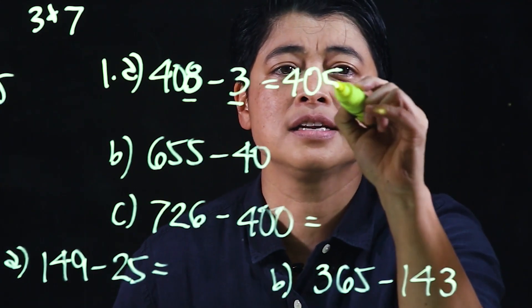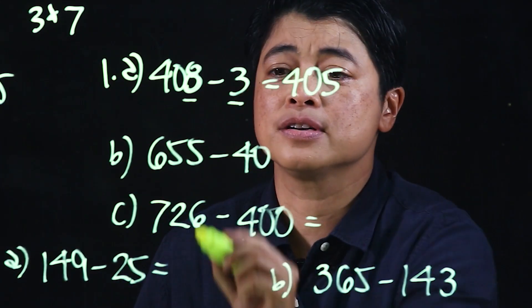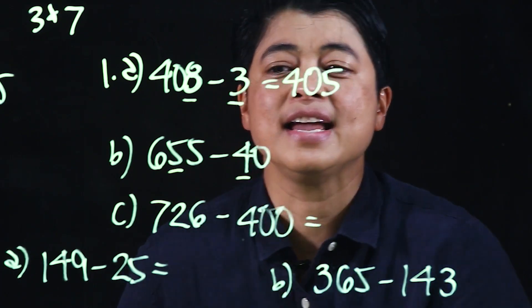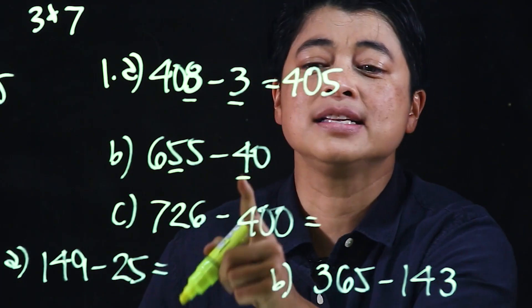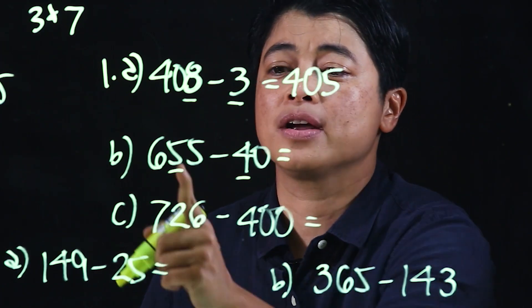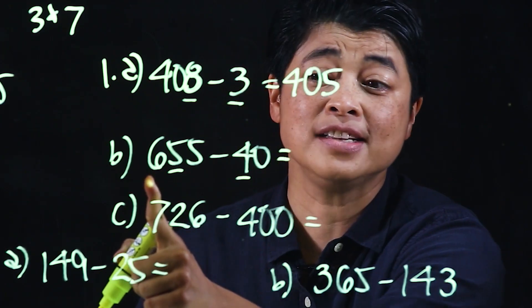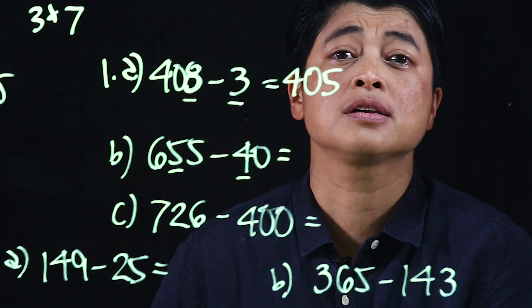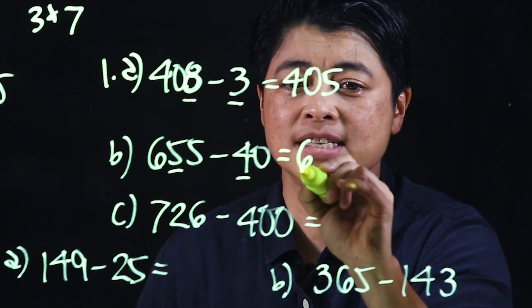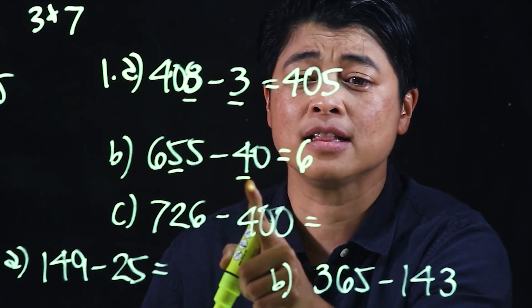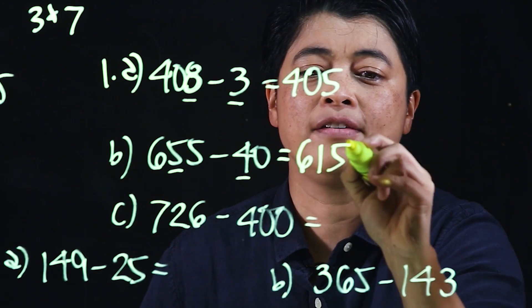Similarly in this case, it's the tens that's being subtracted, so therefore the hundreds and the ones we just copy. So this is 6, and then subtract, that would be 1 and 5.